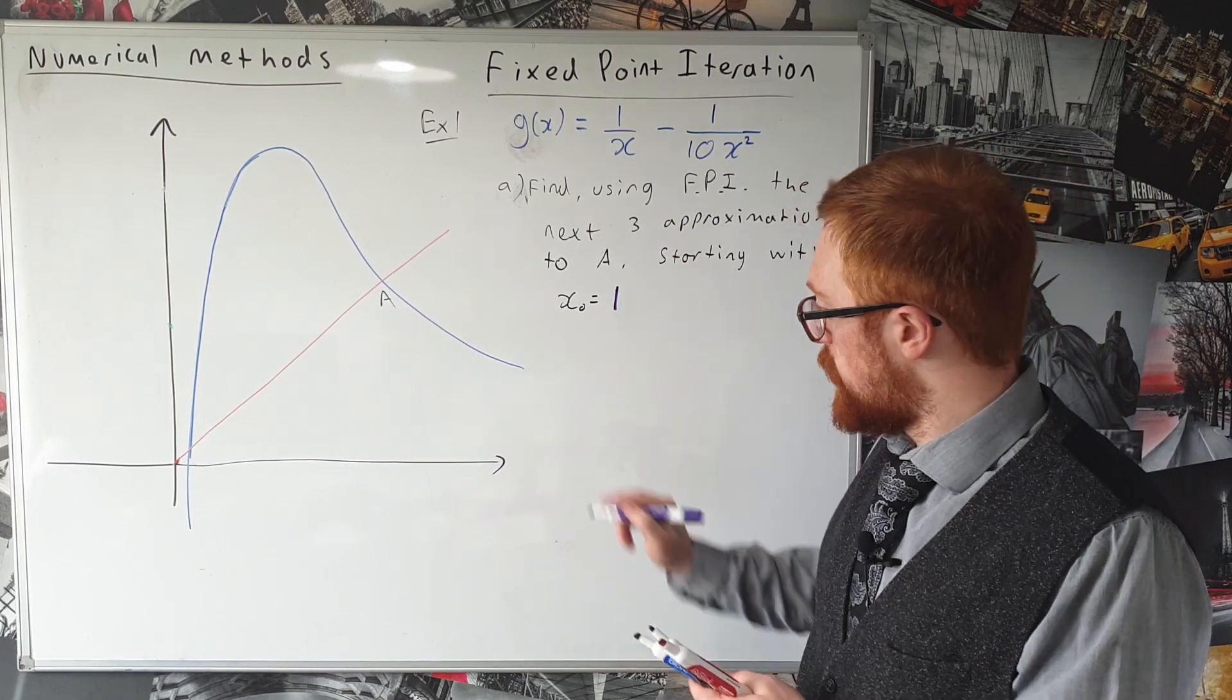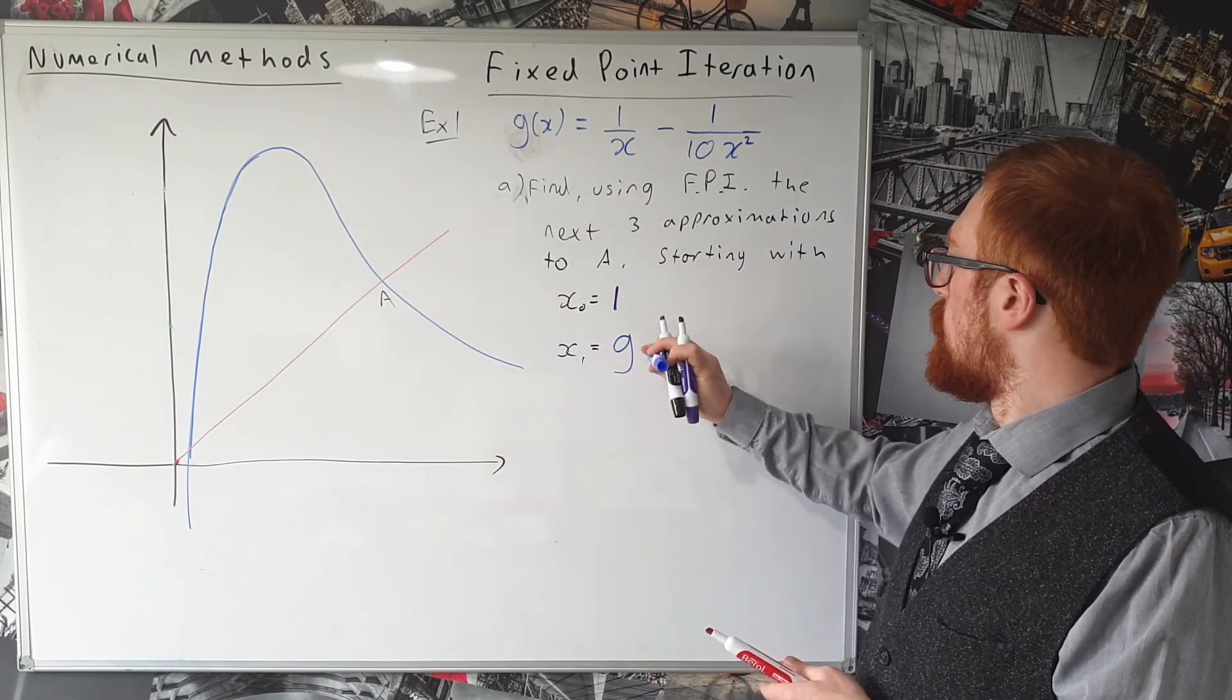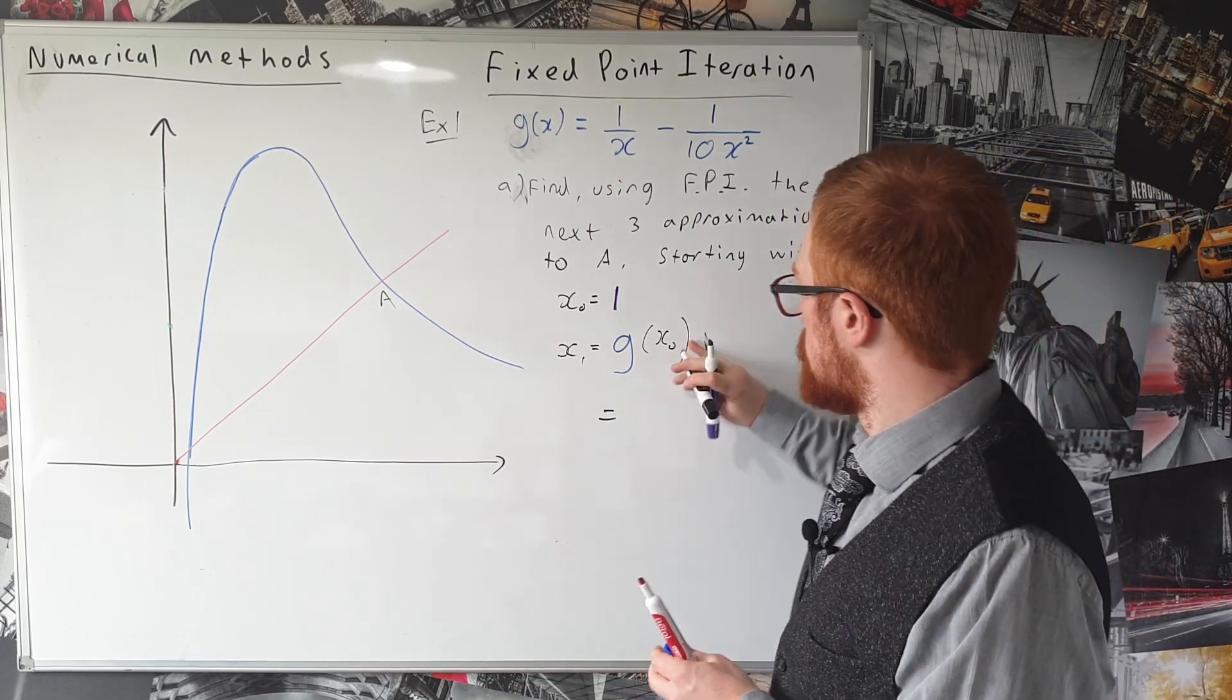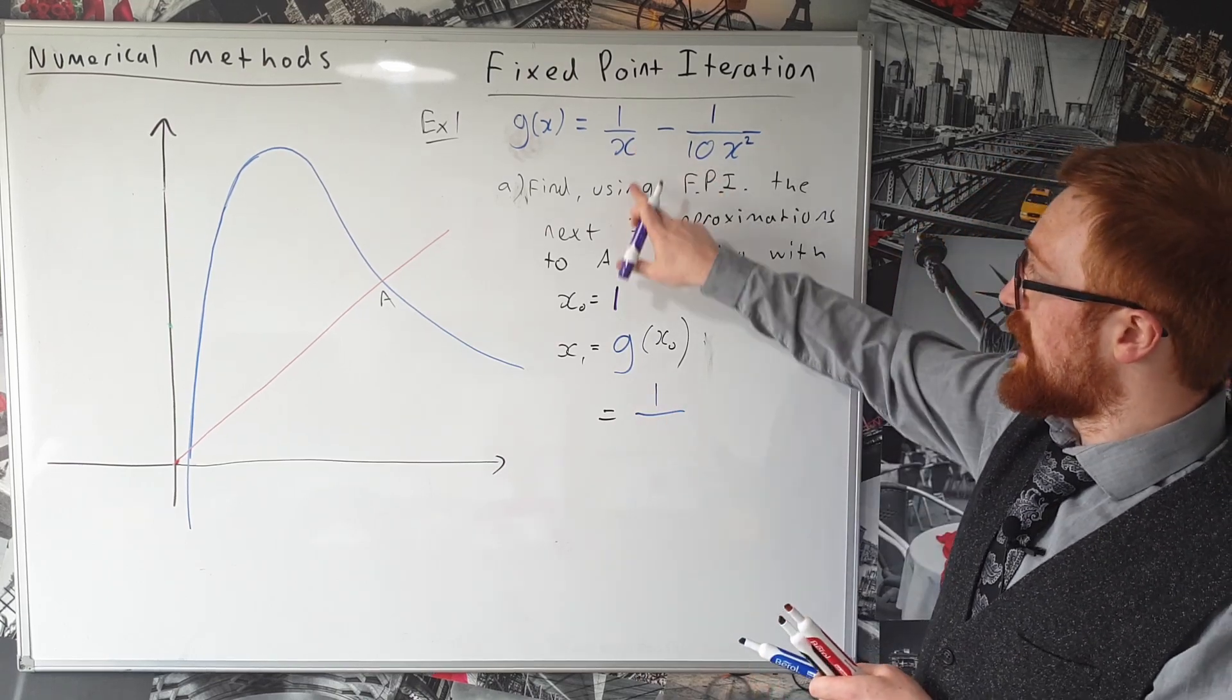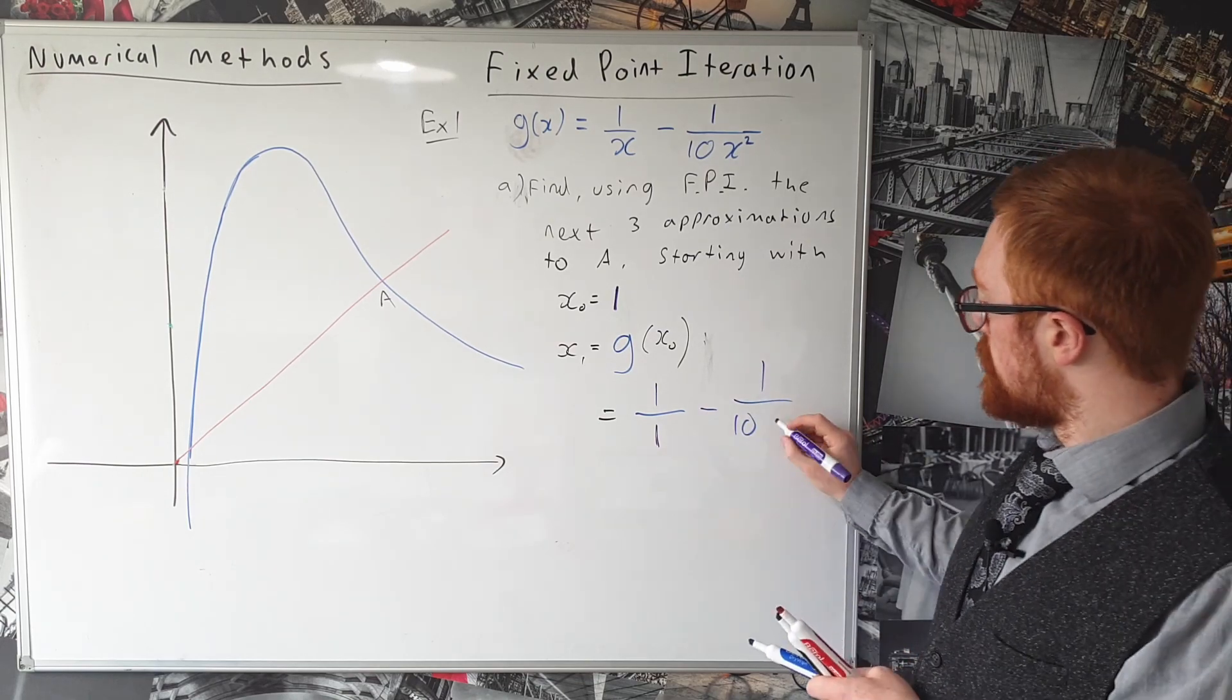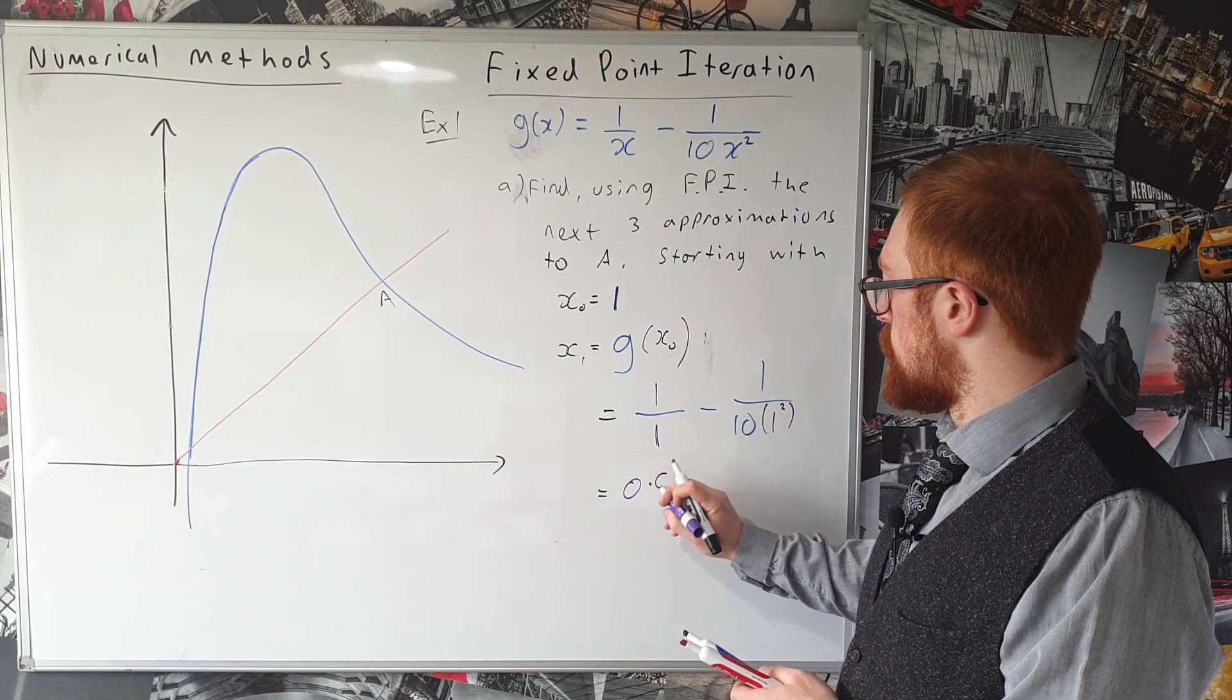So we get that our next term x_1 is equal to g of x_0 which is equal to, we'll do this on a new line. So we're going to have 1 over, well x_0 in this case is 1, minus 1 over 10 times 1 squared. And that we plug into our calculator gives us an answer of 0.9.